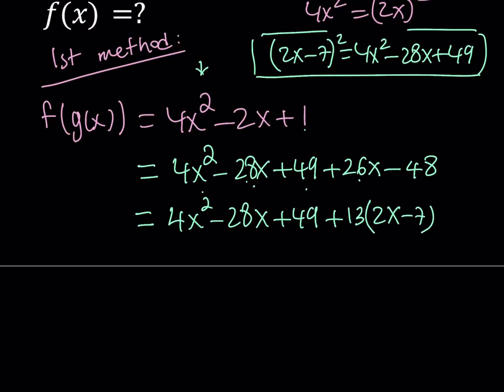You're going to get 26x minus 91. So, this is going to equal 26x minus 91. But you have 26x minus 48. Therefore, to make it turn it into negative 48, you have to add 43. Great. So, we were able to take the expression f of g of x and manipulate it until we got something meaningful in terms of 2x minus 7.